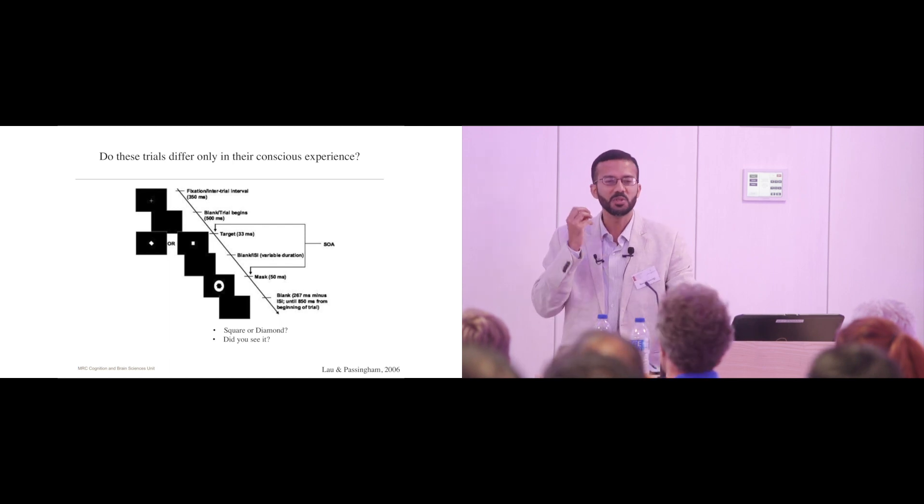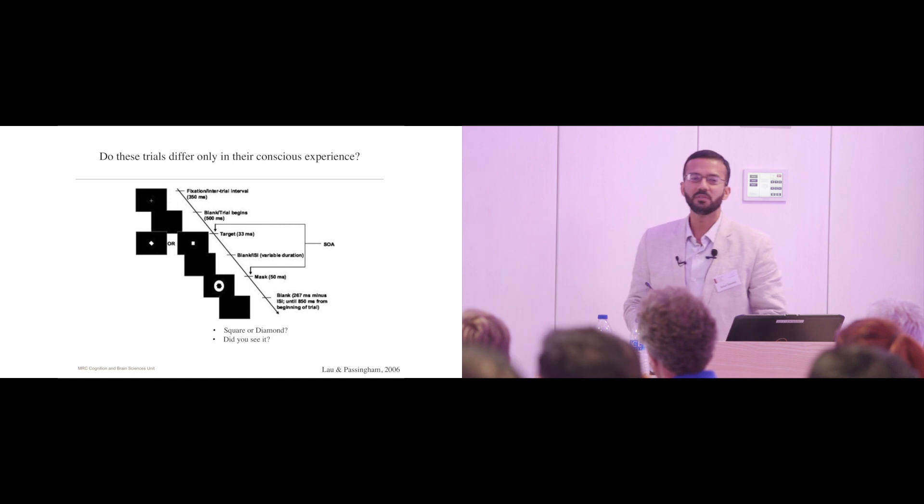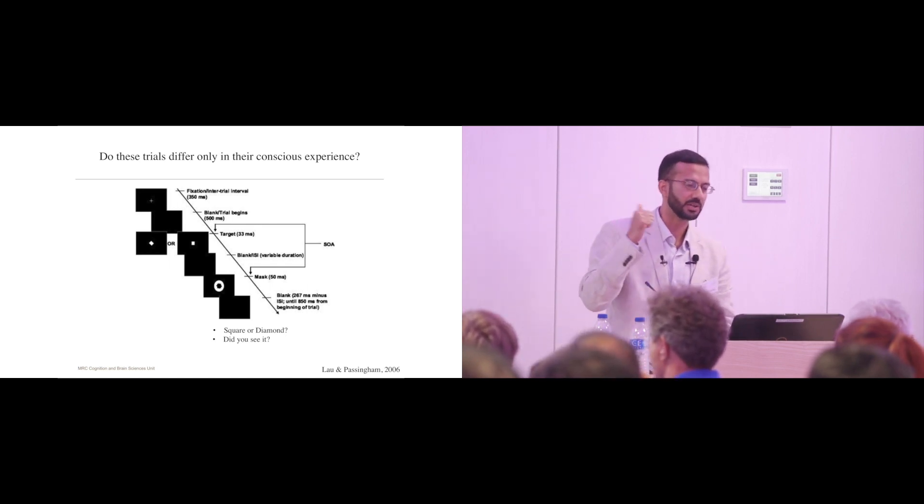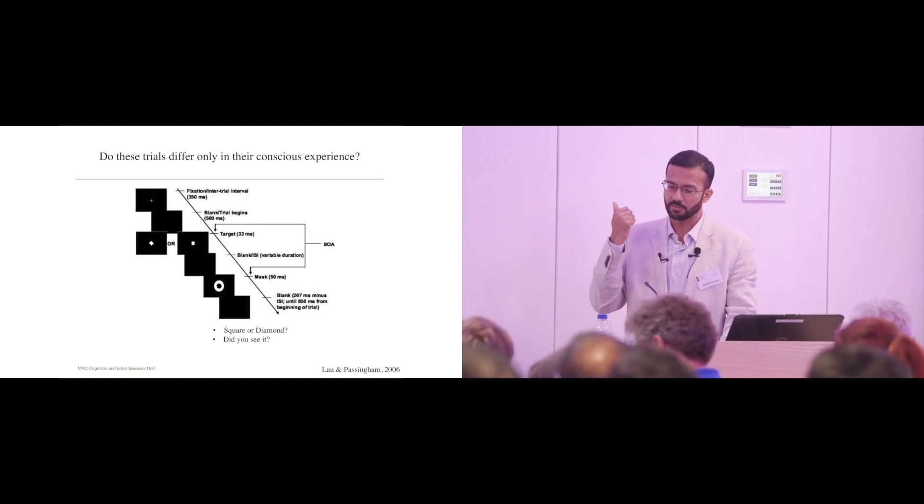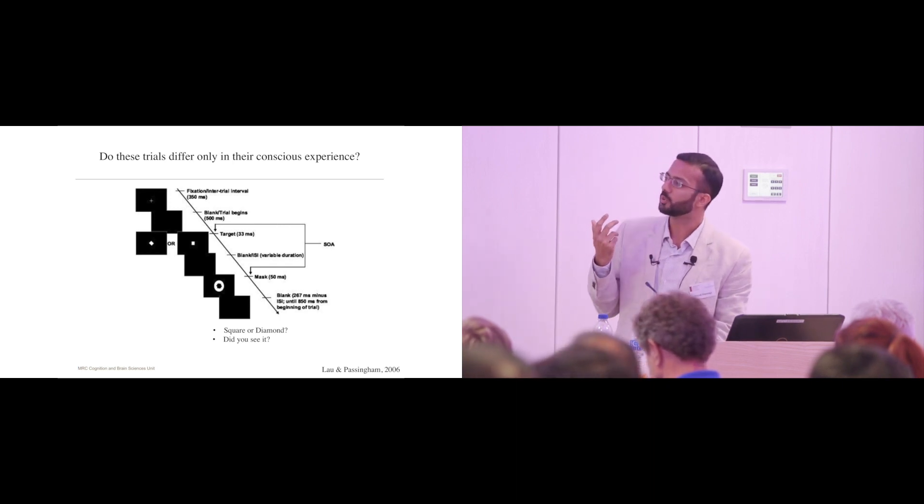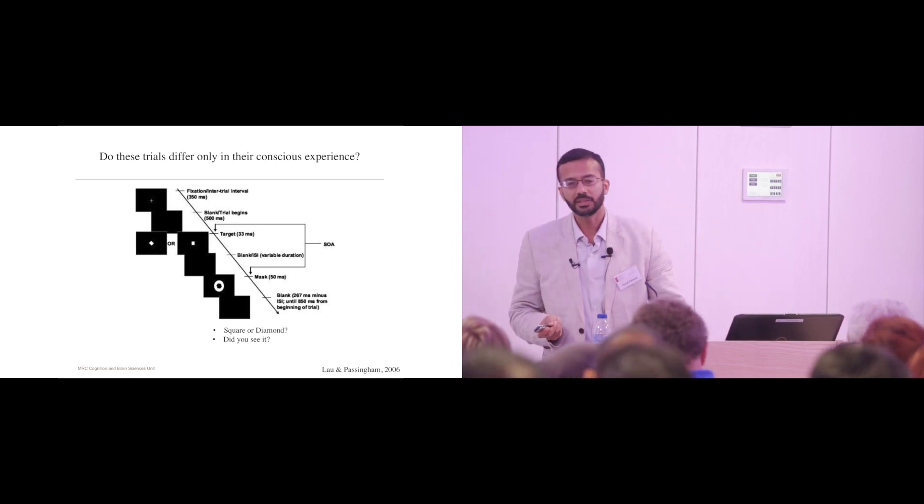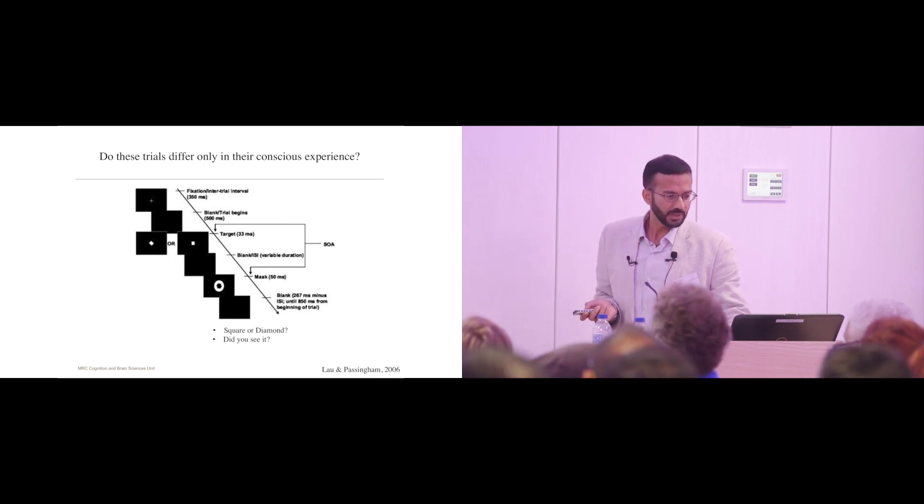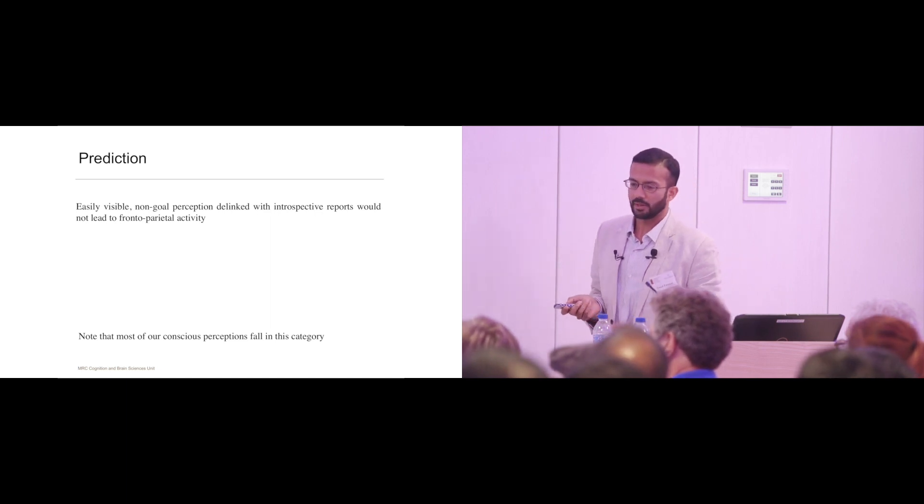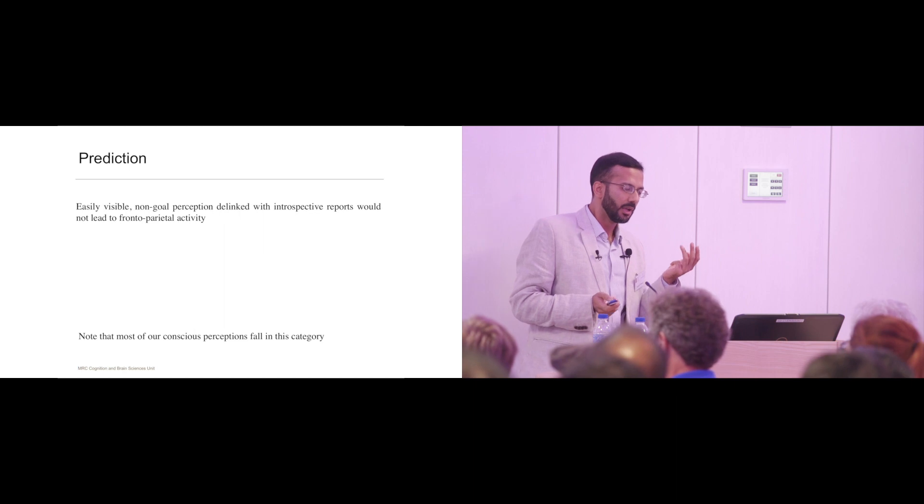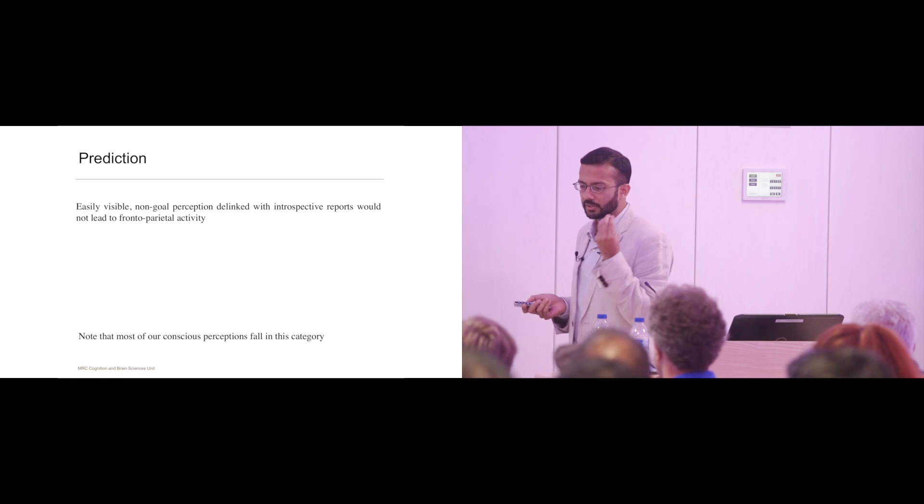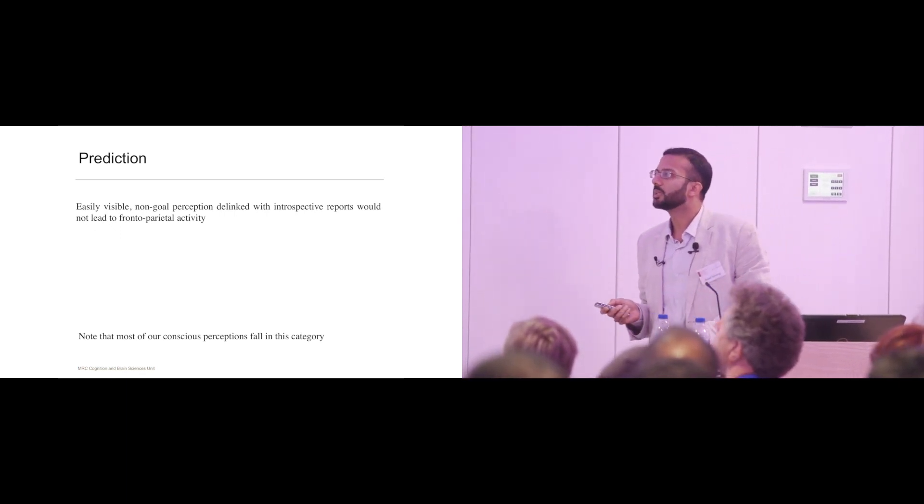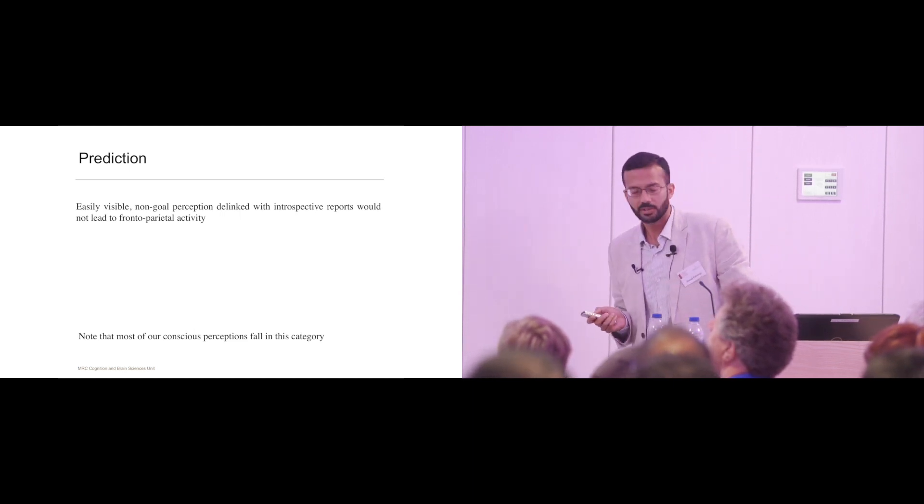Not only that, the instruction has given you a goal, and your goal is to see that stimulus. So every time you see that stimulus, you've achieved a goal. It's a difficult perception, which means conscious and unconscious trials may differ in how well you can manage that perceptual difficulty. Being conscious trials are implicitly linked to goal completion. And thirdly, this requirement to ask 'did you see it?' in this scenario where you'll most of the time not be sure is a difficult introspective task on its own. My view is that these three confounds are the reason behind frontoparietal activity. Then something which is very easily visible, which is not linked with goal completion and is not linked to introspection, should not lead to such activity.